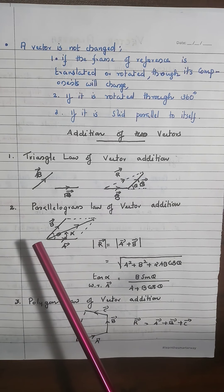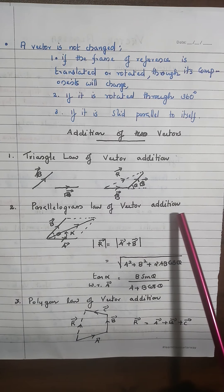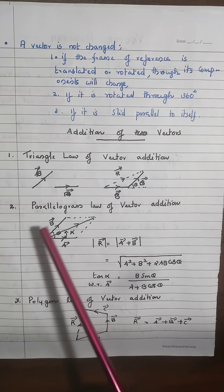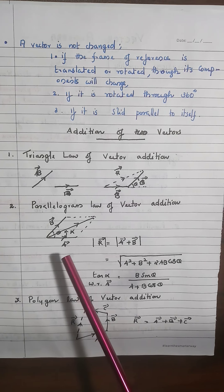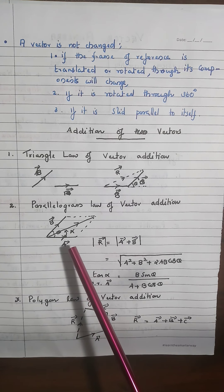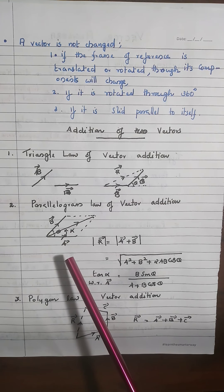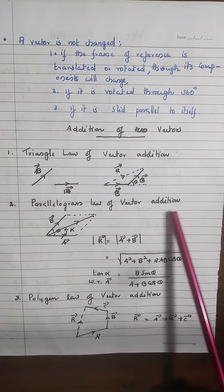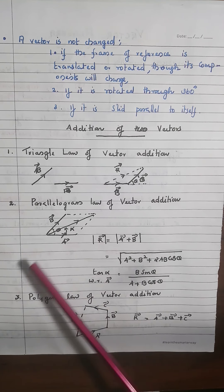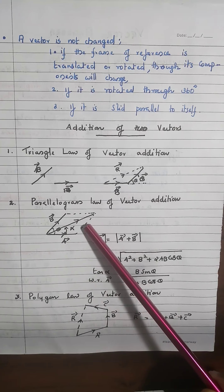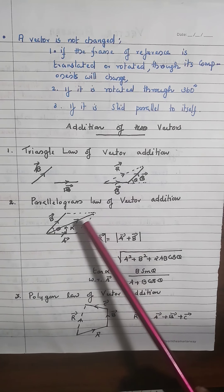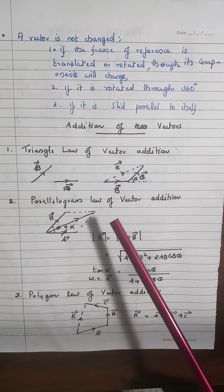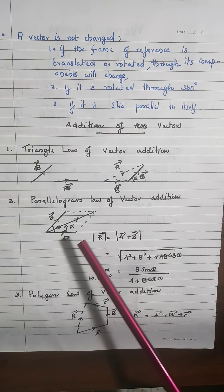The parallelogram law: represent the two vectors A and B as two adjacent sides of a parallelogram, complete the parallelogram, and the resultant is the diagonal. In both cases, the parallelogram law interpretation shows that A and B are arranged in one order, so the triangle law is essentially another interpretation of the parallelogram law.